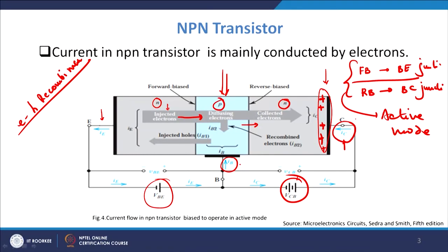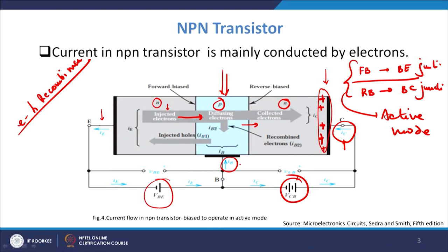Since a large VCB is provided — larger than VBE and reverse biased at the base-collector — the electrons see a very large potential on the collector side and force themselves through the depletion region to reach the collector. As a result, there is a collector current IC, pointing inwards in conventional current because electrons are moving outwards. So IB flows inwards, IC flows inwards, and IE flows outwards.